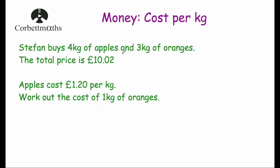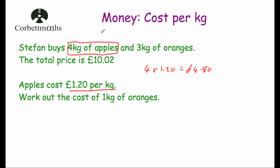The next question: Stefan buys four kilograms of apples and three kilograms of oranges and the total price is £10.02. The apples cost £1.20 per kilogram and we need to find the cost of one kilogram of oranges. Four kilograms of apples at £1.20 per kilogram: four times £1.20 equals £4.80. Subtracting from the total: £10.02 minus £4.80 equals £5.22, so Stefan spent £5.22 on oranges.